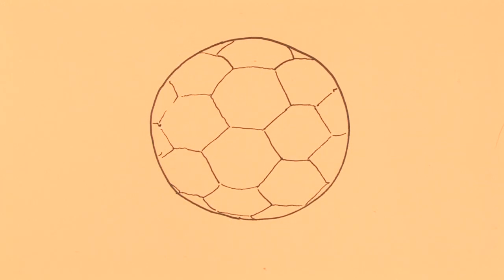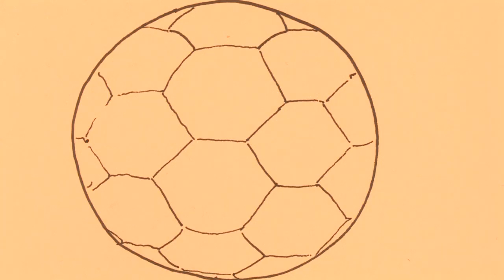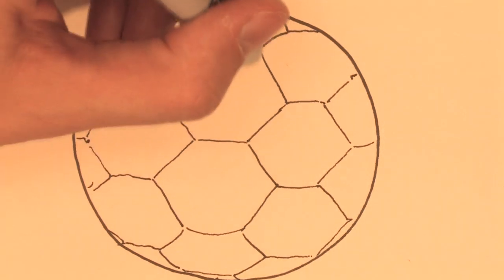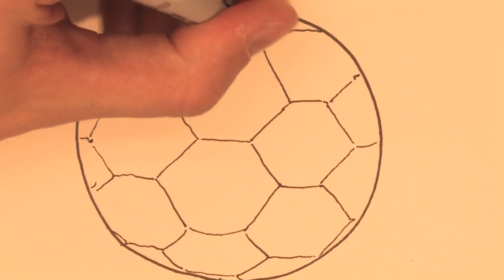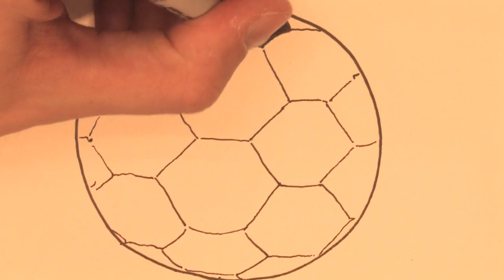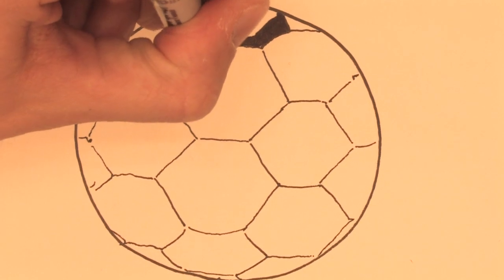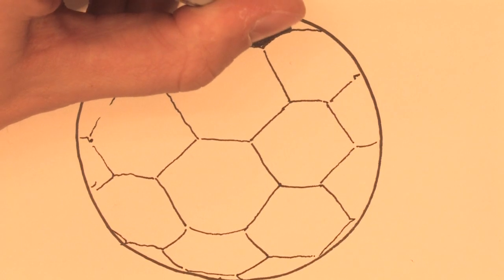There you have the outer shape of the ball. Now grab a thicker pen and fill in the different black hexagons to create the consistent soccer ball look.